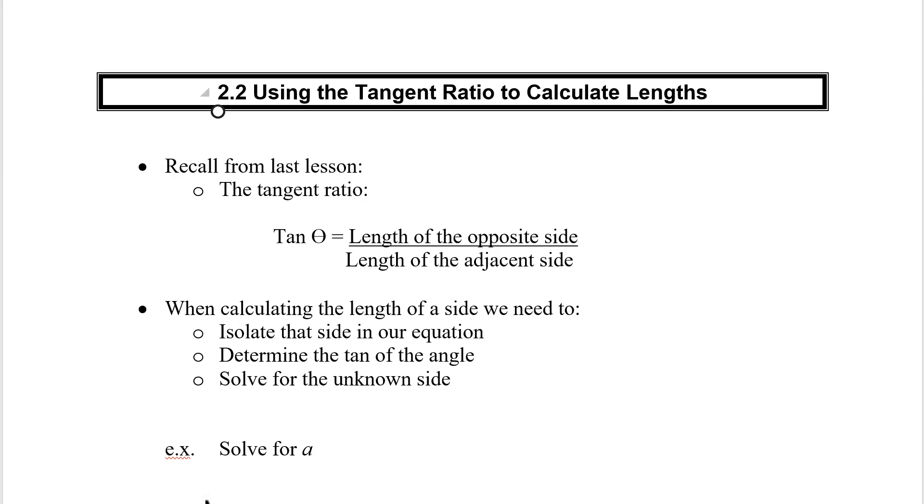The last time we saw how to use a tangent ratio, we were looking at angles, but now we want to figure out from that angle what's the length of one of our two legs of our triangle. So we're going to recall here what the tangent ratio actually is, and it's tan of the angle equals the length of the opposite divided by the length of the adjacent. We remember that from the last lesson, so that is nothing new.